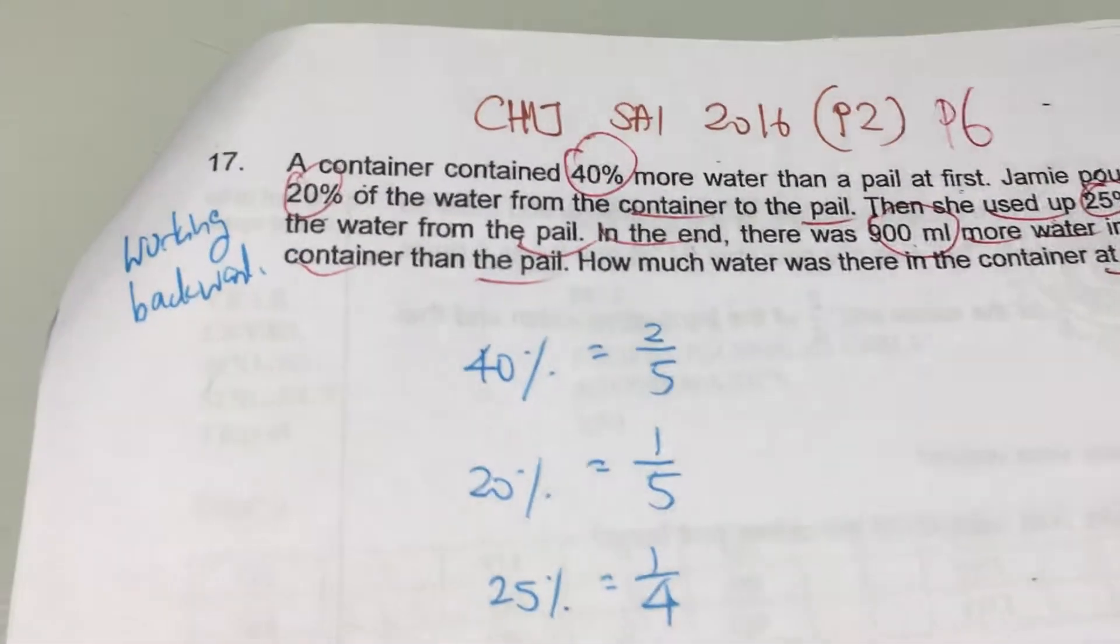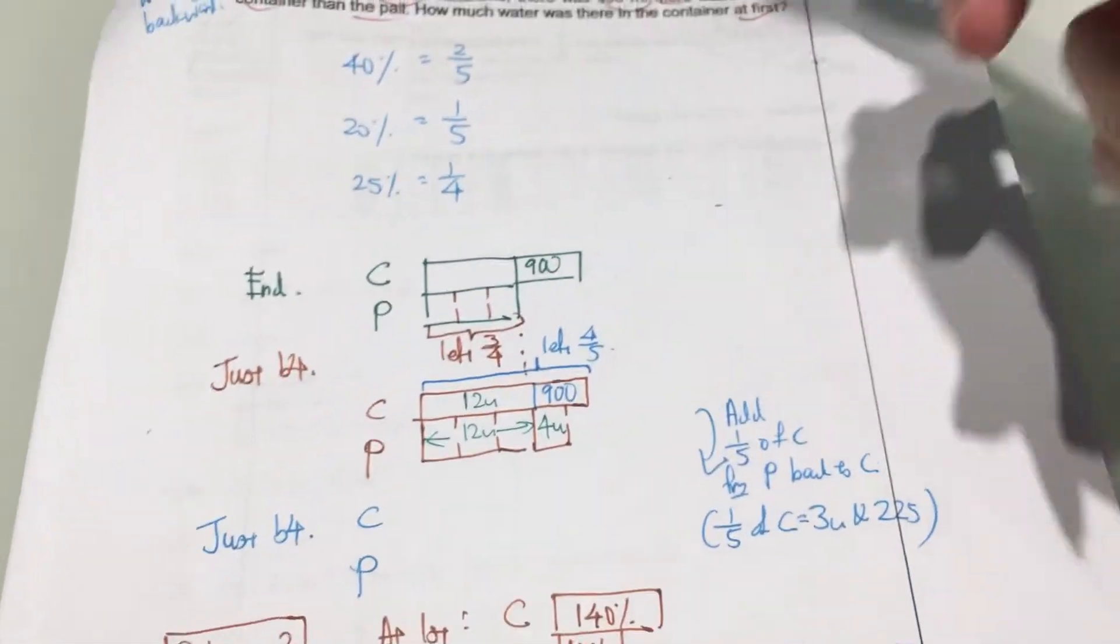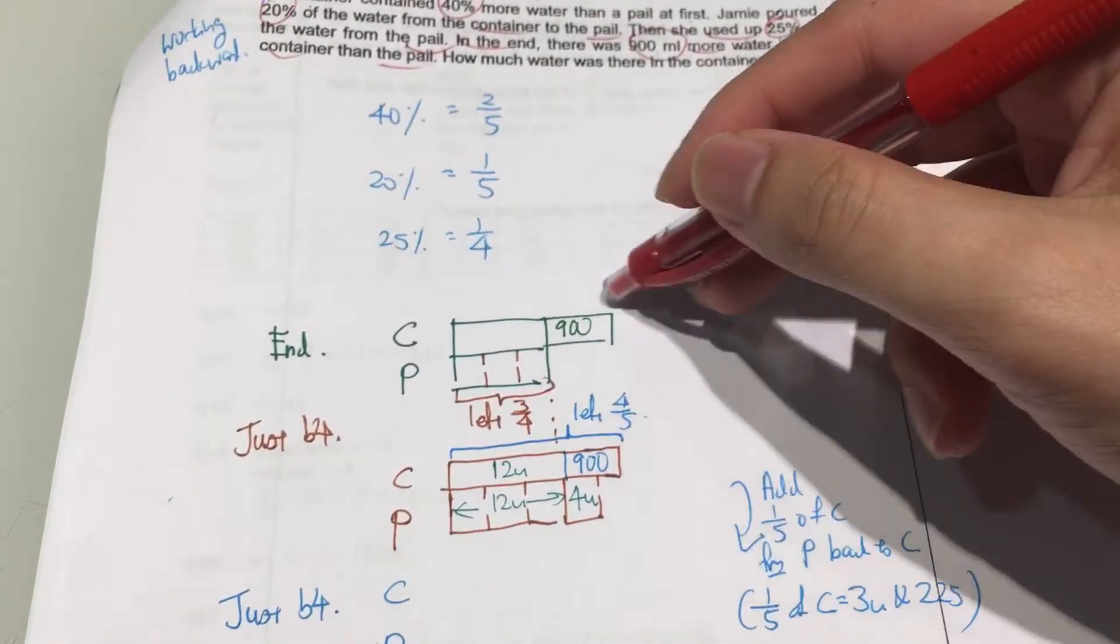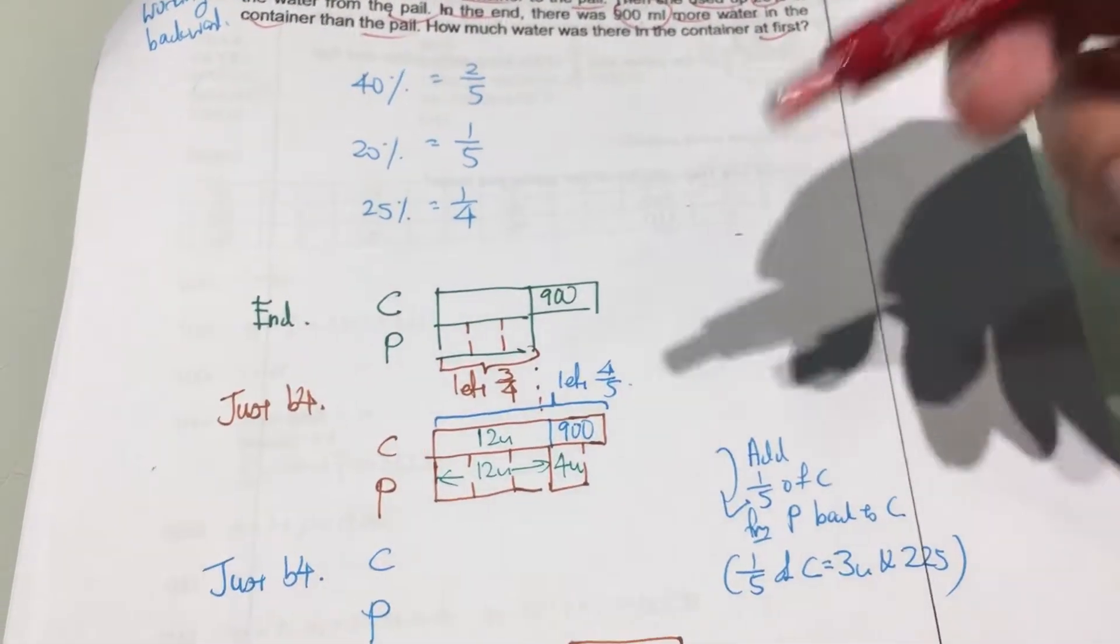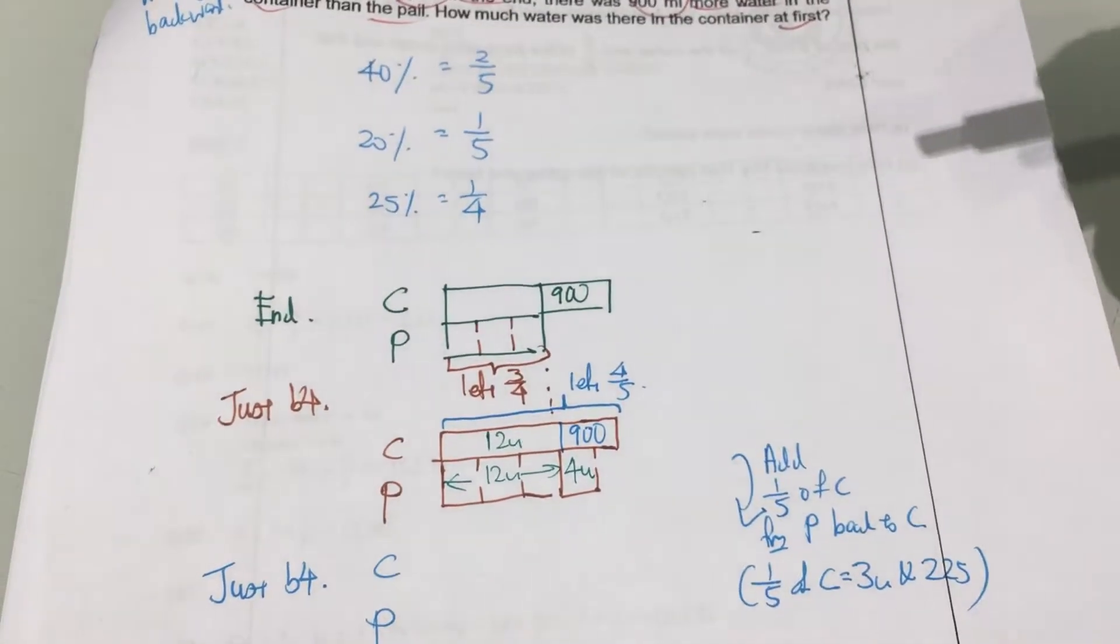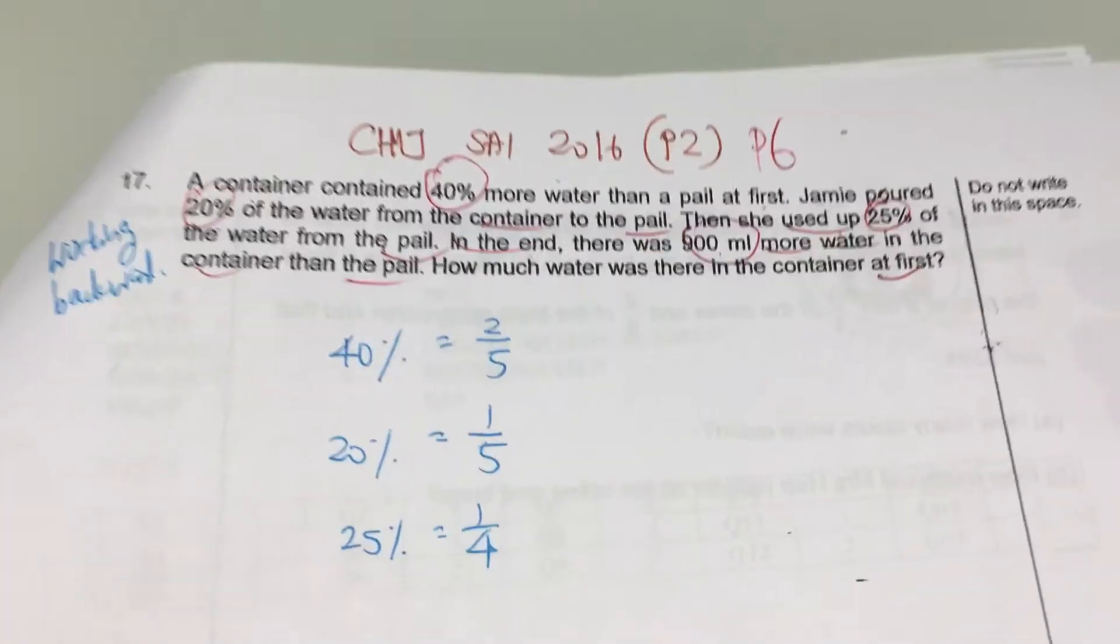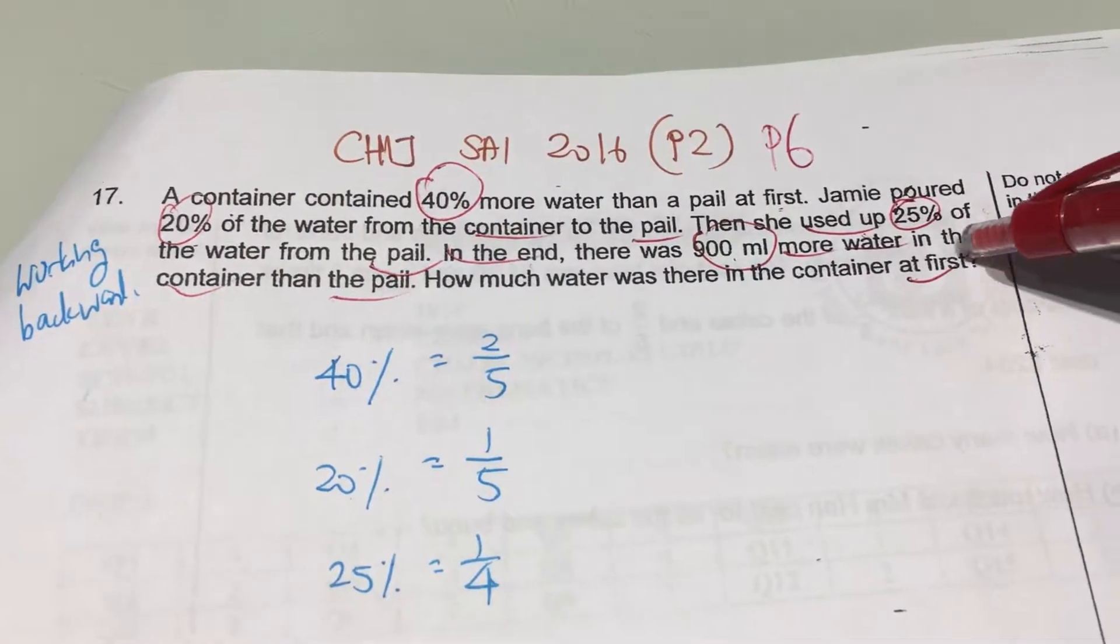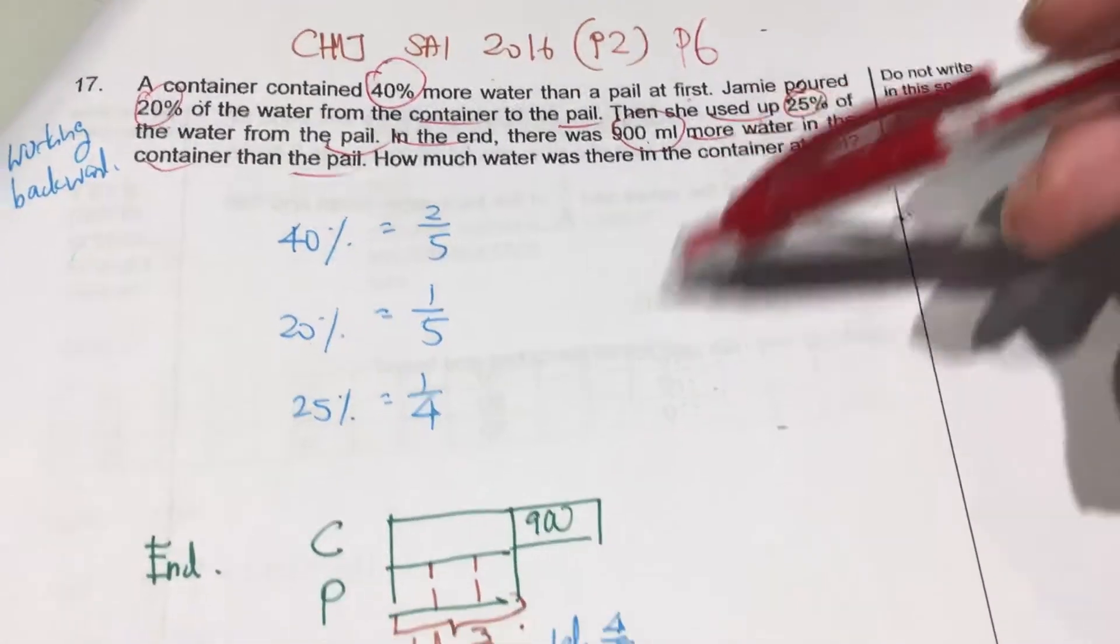As you can see right here, there are two sets of solutions. And even though the first part is not correct, I didn't erase it away because I just want to show you that sometimes, even for ourselves, we are not very sure how to get the answer, but we just have to open up more doors. So normally when we see a working backwards question because of the keyword at first, we will really want to work backwards.